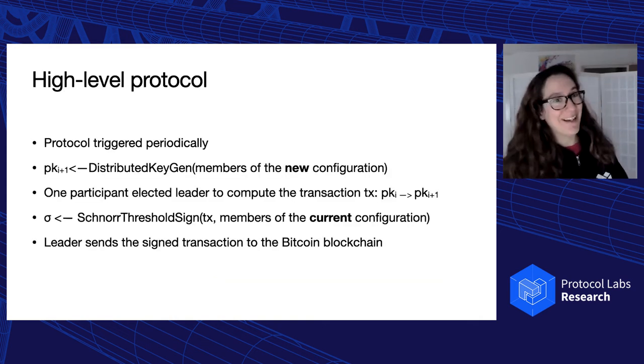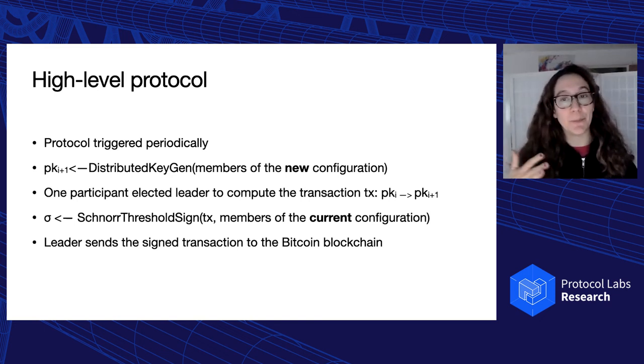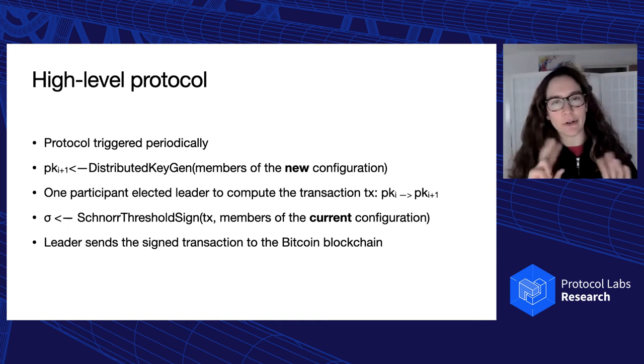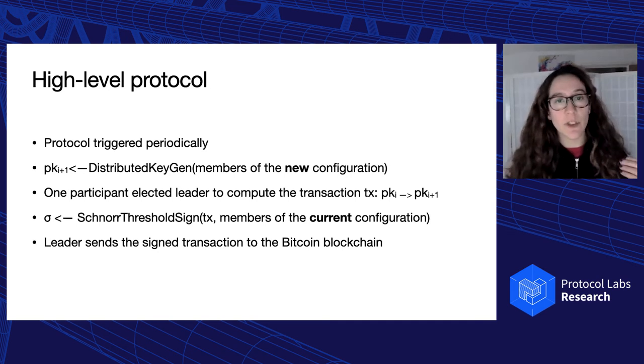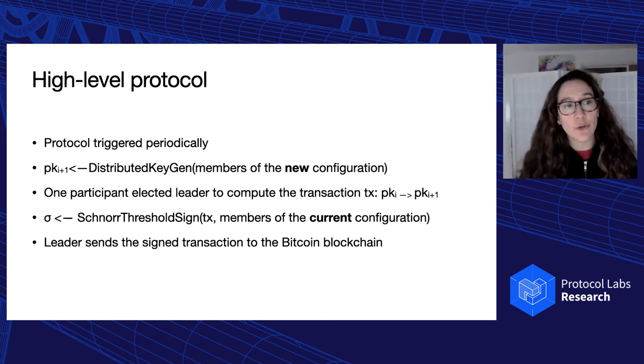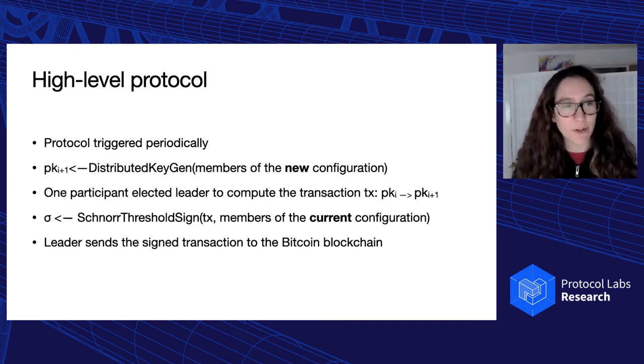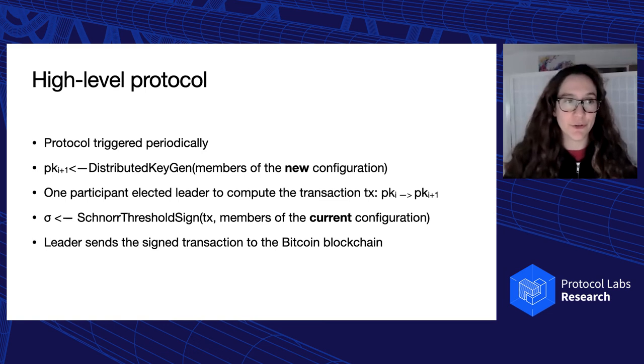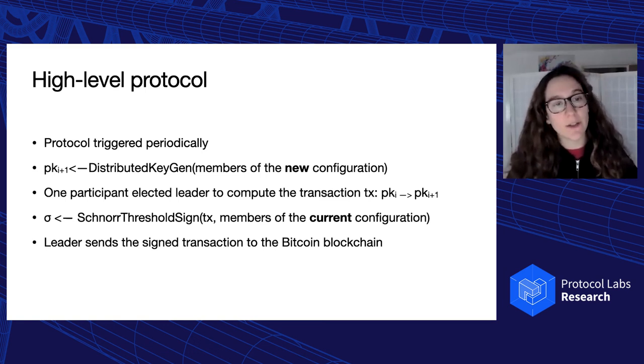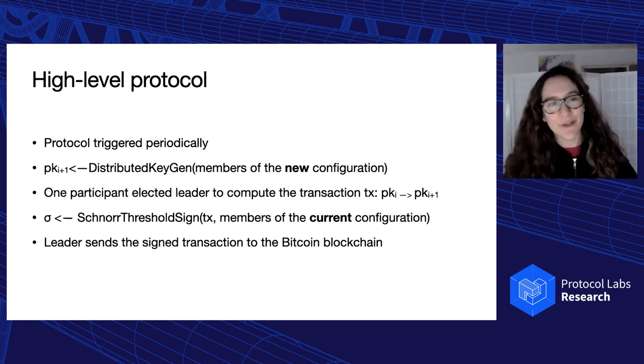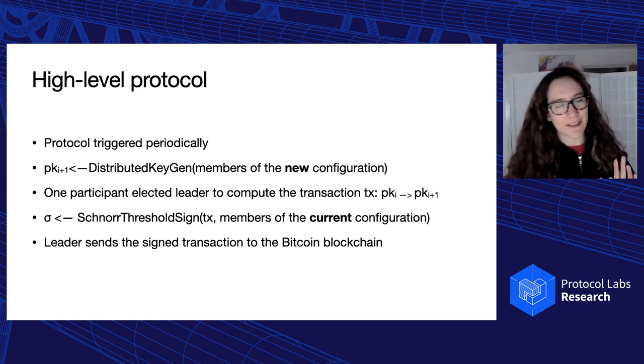Now let's get to the high level protocol. So we assume that the protocol is going to be triggered periodically, for example, once a day, or after some events. And then first, what we need to do is that we need the new members, so the members that are in the new configuration to create their key PKI plus one. So what's going to happen is that we're going to have a distributed key generation algorithm in order to first determine this key. Then we're going to elect one participant to create the transaction from PKI to PKI plus one, and also include the checkpoints. And then we're going to have the threshold signing protocol that needs to take place. And at the end of this threshold signing protocol, the transaction is signed and the leader can send the transaction to the Bitcoin blockchain. So that's the high level hiding behind the protocol.